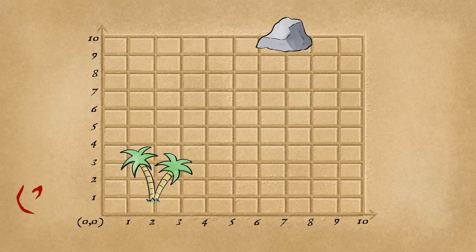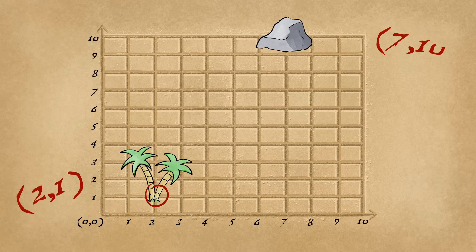To plot the ordered pair two, one: go right two, jump up one, and it's done.